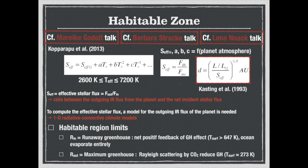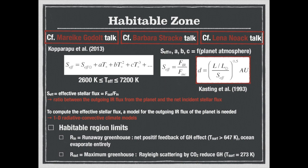The effective star flux is given by the ratio between the outgoing infrared flux produced by the planet and the net incident star flux. And to get this outgoing infrared flux, we need to use the 1D radiative-convective climate model. The habitable region limits are usually defined by the runaway greenhouse for the inner edge and the maximum greenhouse for the outer edge.